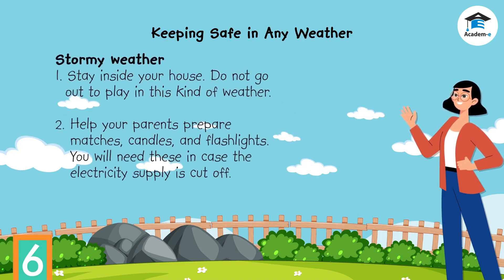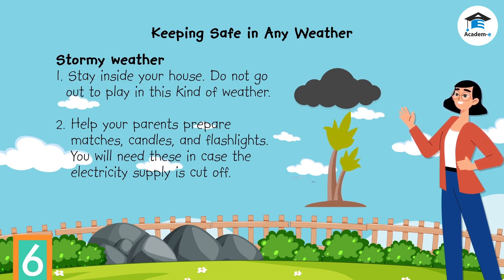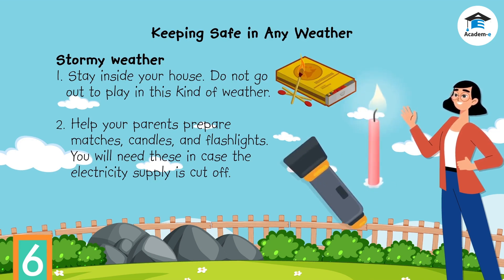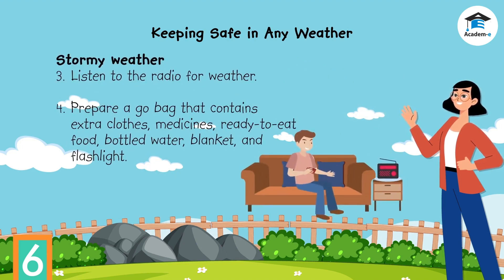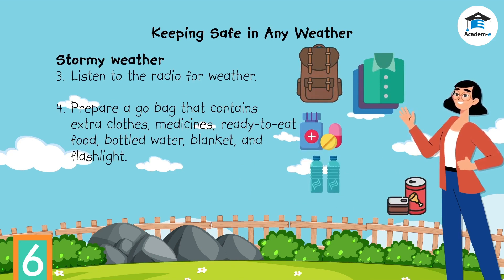During stormy weather, the heavy rains may cause flooding. Strong winds can blow away roofs and branches of trees, uproot plants, and even destroy houses and other structures. To stay safe: stay inside your house and do not go out to play. Help your parents prepare matches, candles, and flashlights in case the electricity supply is cut off. Listen to the radio for weather updates. If you live in a place that gets easily flooded, prepare a go bag containing extra clothes, medicines, ready-to-eat food, bottled water, a blanket, and a flashlight, in case you need to evacuate.